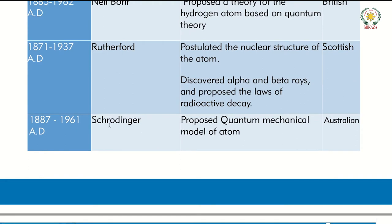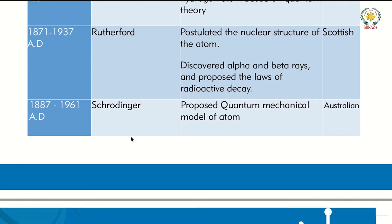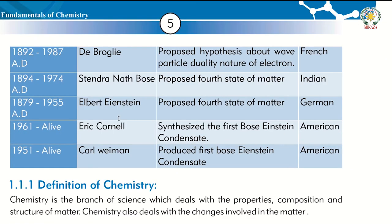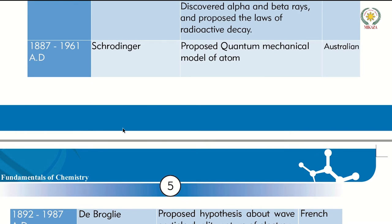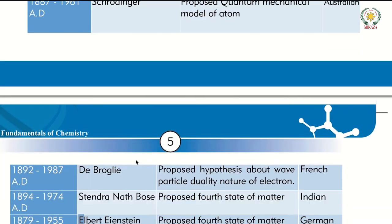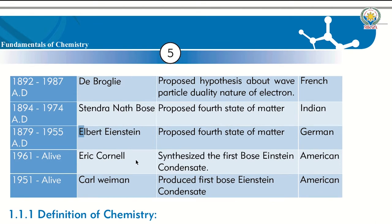This is Schrödinger. Although this is chemistry, if you have a copy, you have noted the scientists. When you write Albert Einstein, the 'Albert' is written with a capital A. These are the six scientists which are new in this book: Schrödinger, de Broglie, Stendra, Albert Einstein, Harry Cornell, and Carnot.